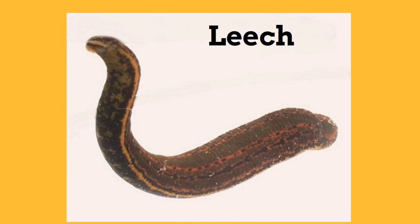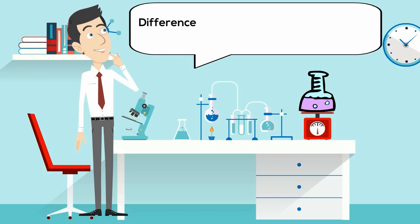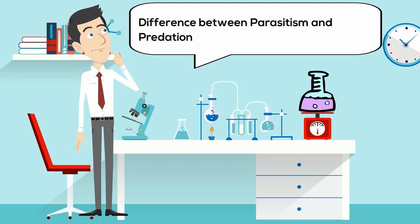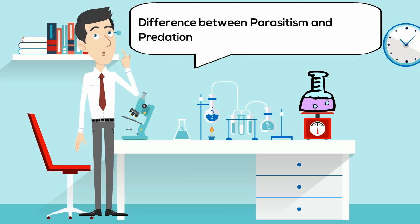Number 6: In many examples the parasite will be much smaller and weaker than the host. Because the predator must consume their prey, they will often be stronger, faster, and larger. So there we go — 6 reasons why parasitism and predation are different.